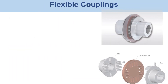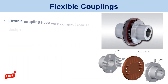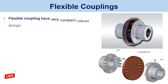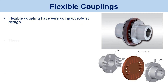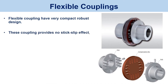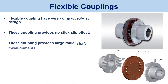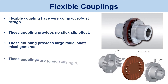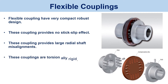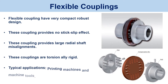Flexible couplings. Flexible couplings have a very compact, robust design. These couplings provide no stick-slip effect and accommodate large radial shaft misalignments. These couplings are torsionally rigid. Typical applications involve printing machines and machine tools.